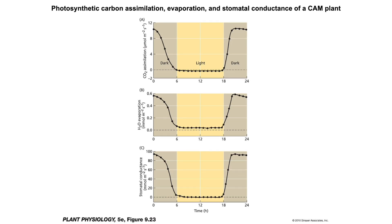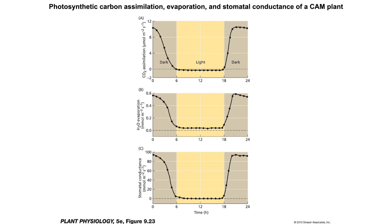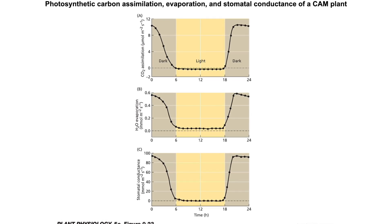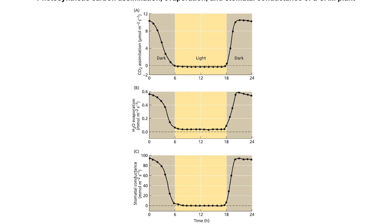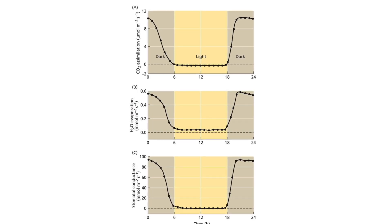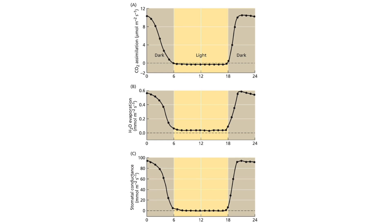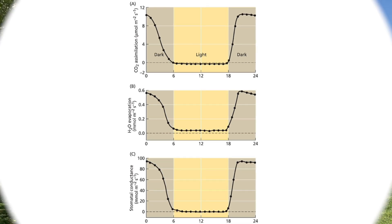CAM plants also have CO2 concentrating mechanisms, as discussed in Lecture 8. Like C4 plants, rising CO2 concentrations are not expected to impact the photosynthesis of CAM plants. Today, we've learned that there are strong environmental influences on photosynthesis — in particular, the amount of light, temperature, and the amount of CO2 in the air.